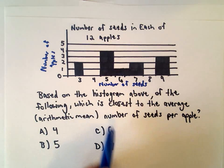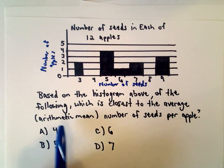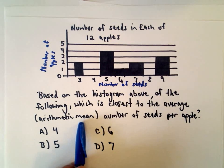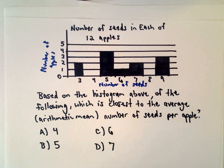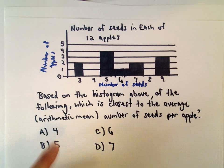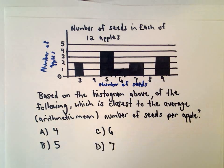Based on the histogram above, which of the following is closest to the average, and by average they mean the arithmetic mean, number of seeds per apple. So we want to figure out what's the average number of seeds per apple. The answer choices are 4, 5, 6, or 7.